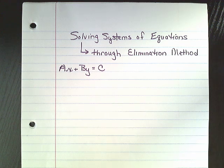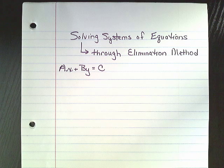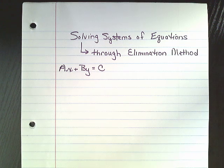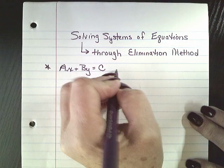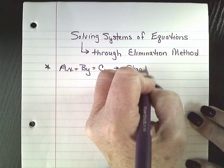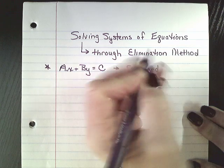How can we eliminate one of the variables to solve for the other? Now this is two variables, x and y, and both of the equations must always be written in standard form. They must always be written in standard form in order to use the elimination method.